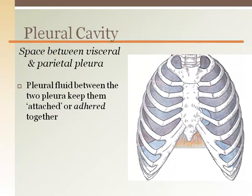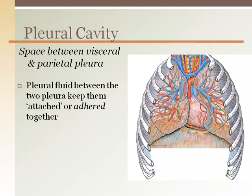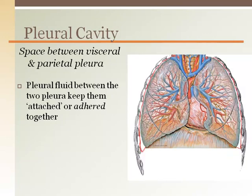The pleural cavity is the space between the visceral pleura and the parietal pleura. The pleura is a serous membrane, which means that it is a membrane folded back on itself, like a fist pushing into a balloon. The part of the membrane that is fused with the lung itself and is part of the surface of the lung is the visceral pleura. That extends out and around to the inside of the chest wall and diaphragm below, which is called the parietal pleura.